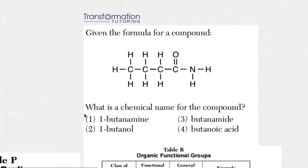Now let's go ahead and look at this molecule and look at the chemical names provided. So we can see that the names provided are 1-butanamine, 1-butanol, butanamide, and butanoic acid. So the difference between all of the names is the ending: amine, ol, amide, and oic acid.